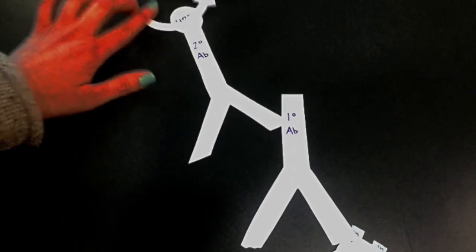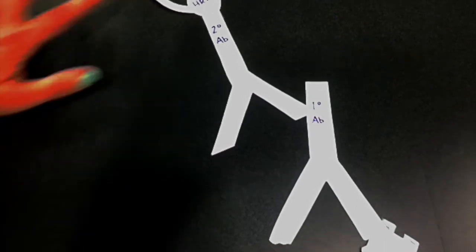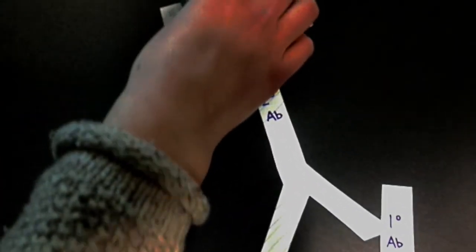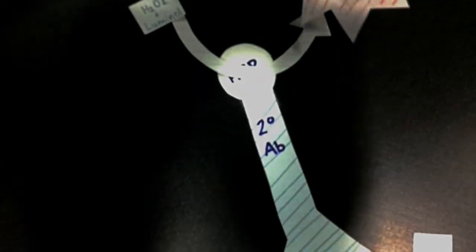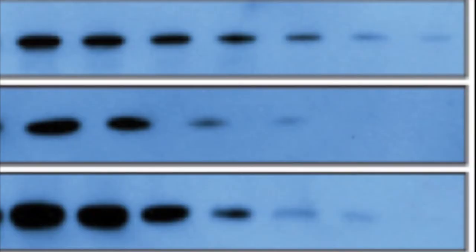You can follow this by adding your substrate solution, at which point a signal will be produced wherever protein-protein interaction has taken place and will show up as a band on your x-ray film.